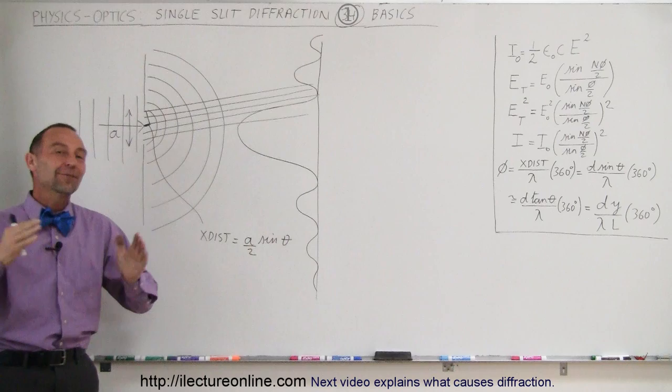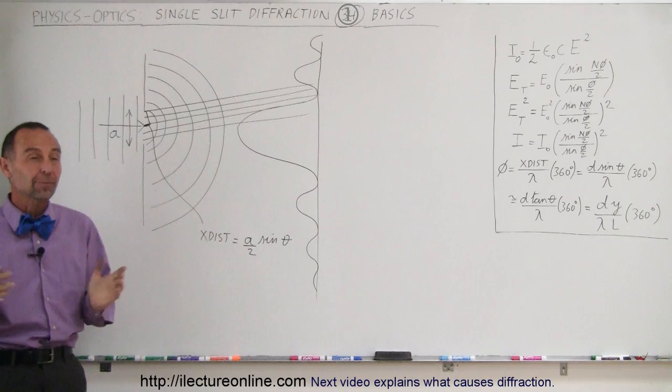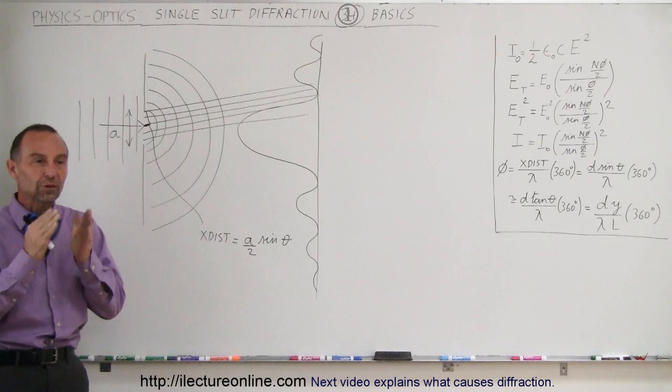Welcome to ElectronLine. In the previous several dozen videos, we talked a lot about interference patterns between rays going to multiple slits — two slits, three slits, four slits, and so forth. We had all kinds of what we call interference patterns. But the one thing we ignored to mention was that any time light goes through a very narrow slit, there's also diffraction.